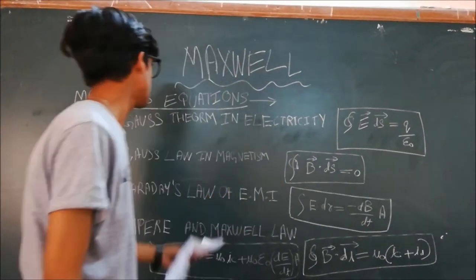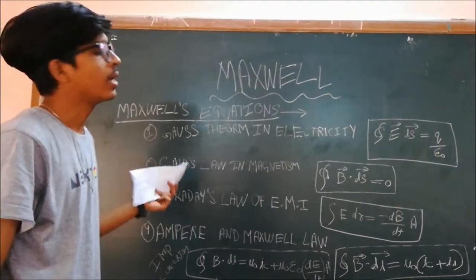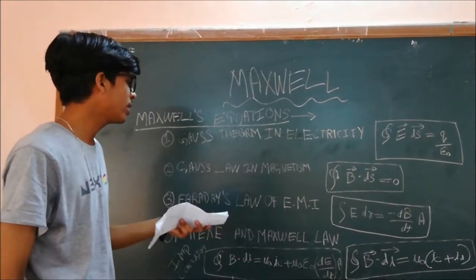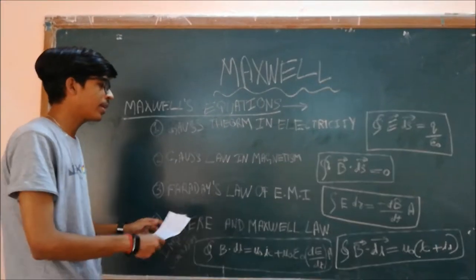So first equation is Gauss's theorem in electricity. Second is Gauss's law in magnetism. And third is Faraday's law in electromagnetic induction. And fourth is Ampere and Maxwell's law.